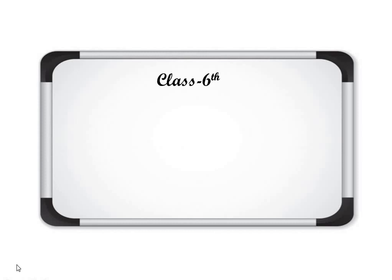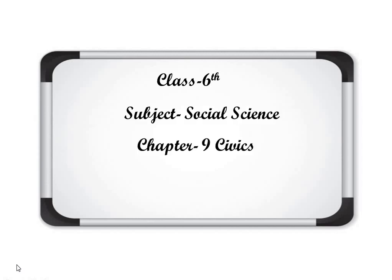Good morning everyone and welcome to this class. This is class 6, subject Social Science, Chapter 9 of Civics, and the name of the chapter is Urban Livelihood. In Chapter 8 of civics, we covered Rural Livelihood, where we talked about village areas and how people get their earnings. Most people in rural areas are dependent on primary activities, especially agriculture.